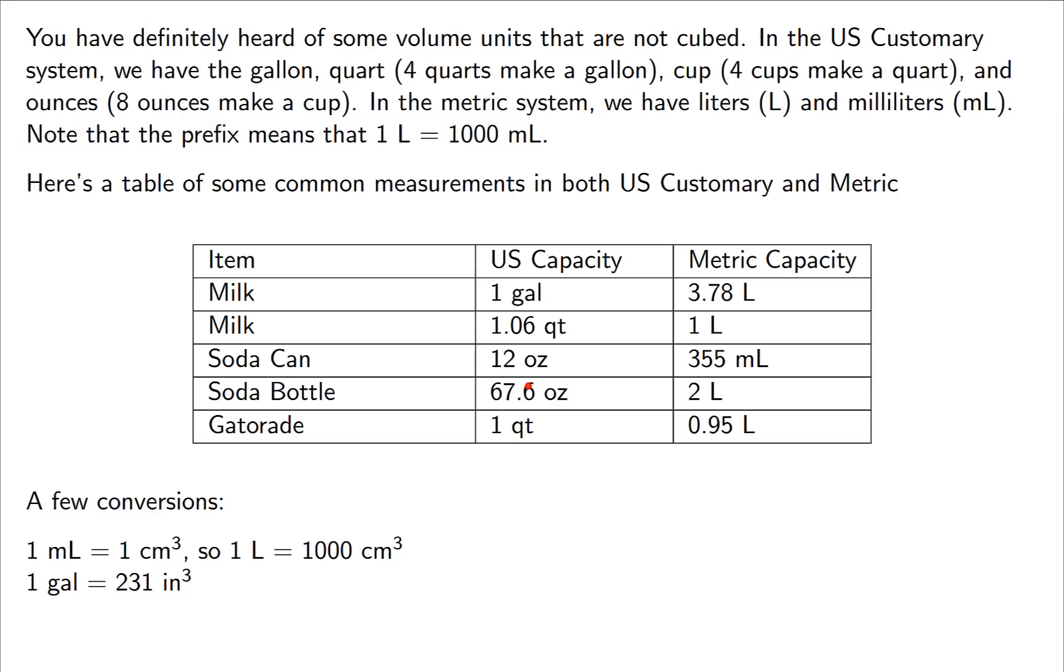The 2-liter bottle is 67.6 ounces. That just sounds strange to look at it that way. We're used to 2 liters. So this is one metric unit that has integrated itself into our lives more so than other ones. And then one interesting example is that the large bottles of Gatorade are actually 1 quart. Very American-made there. And so it's actually equal to 0.95 liters, because, again, a quart is a little bit smaller than a liter.